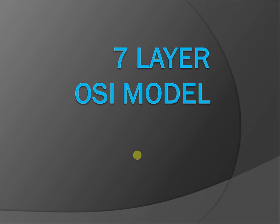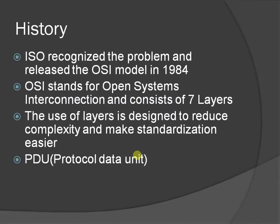Hi friends, today we are learning about the OSI model — the 7 layer OSI model in computer networks. ISO recognized the problem and released the OSI model in 1984. OSI stands for Open System Interconnection and consists of 7 layers.